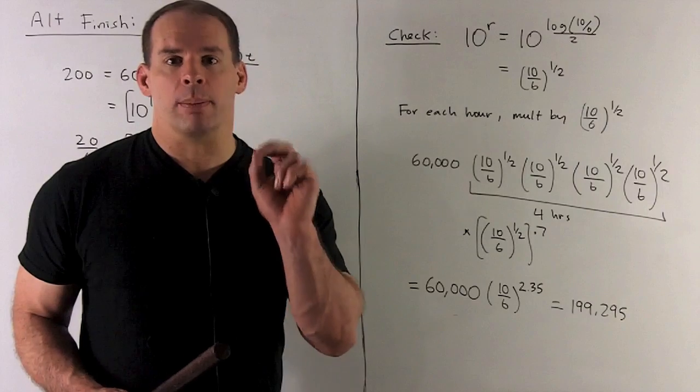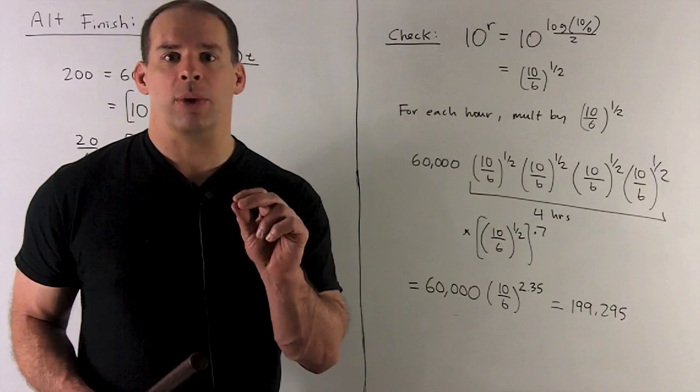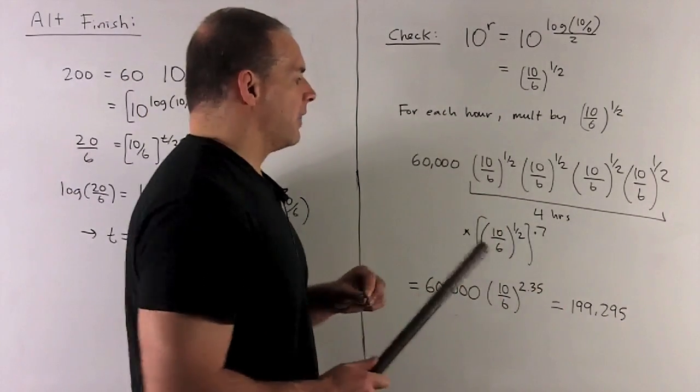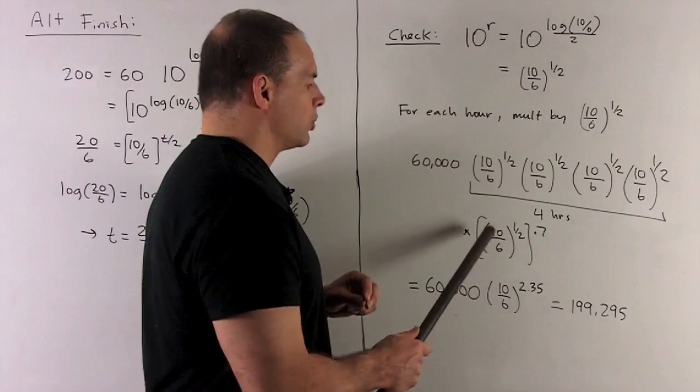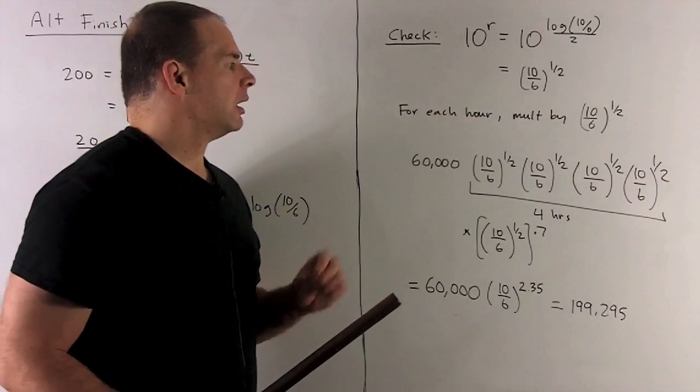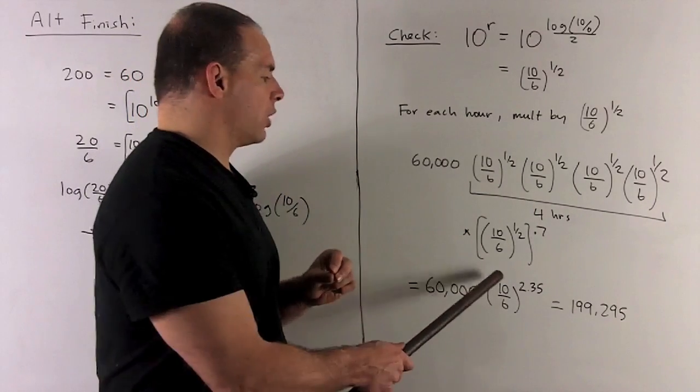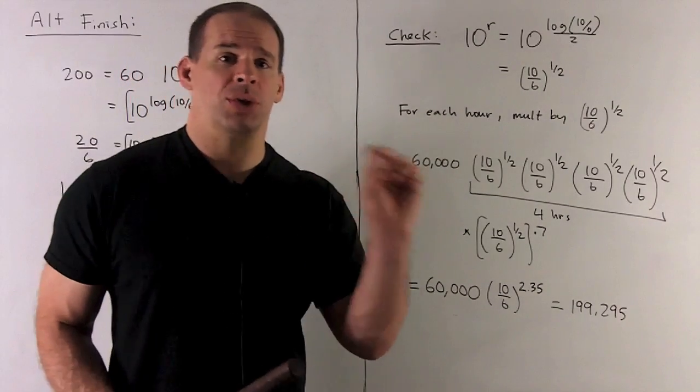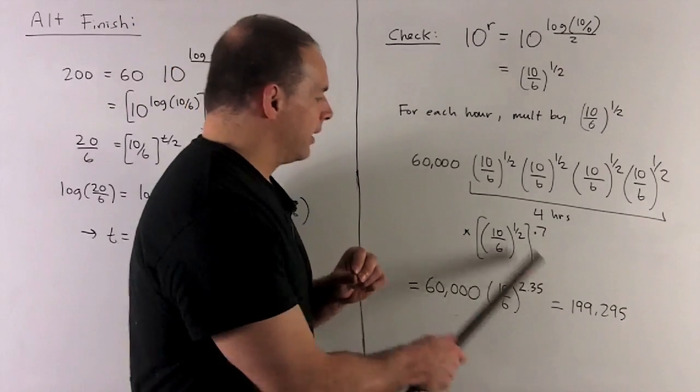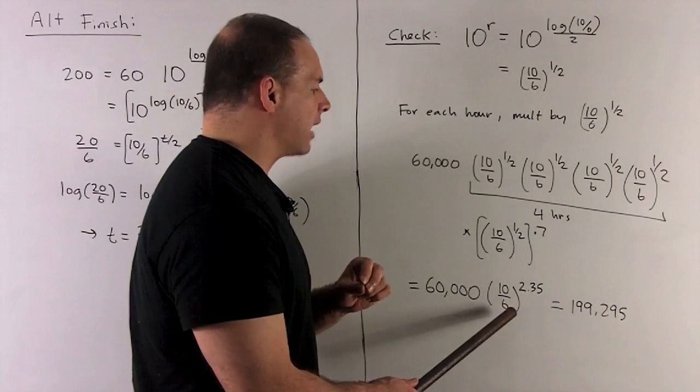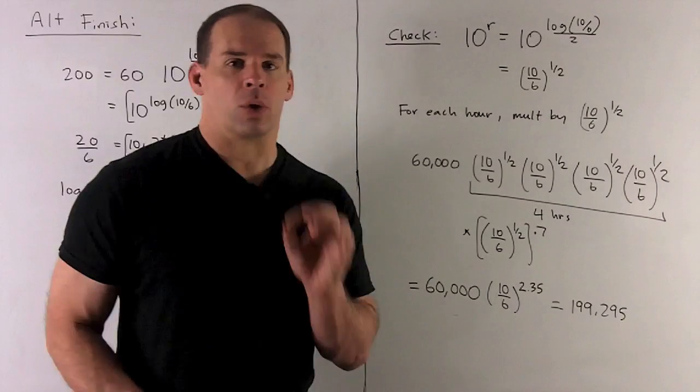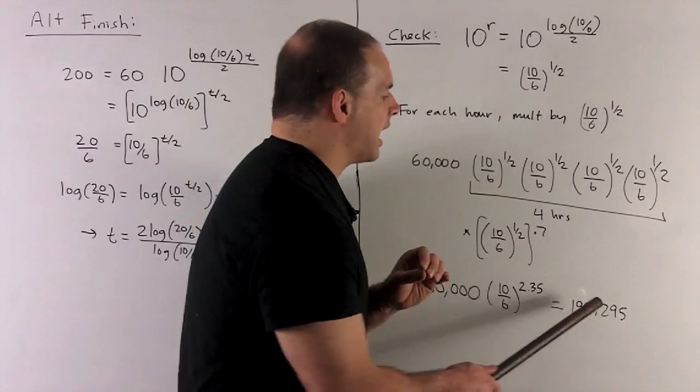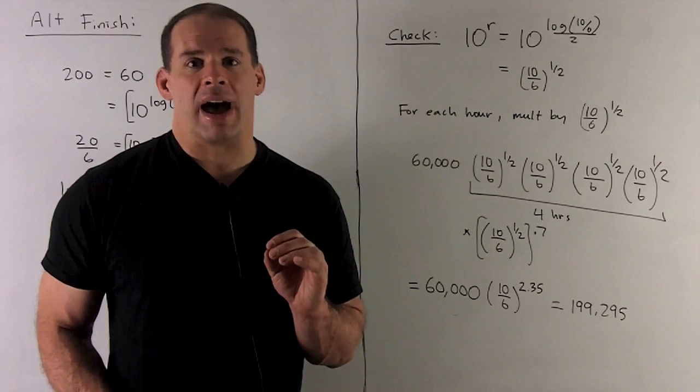That's going to be what we multiply by when one hour passes. So we have 4.7 hours passing, so I'll multiply by this 1, 2, 3, 4 times, and then for my last 0.7 hours, we're just going to multiply by that thing raised to the 0.7. If you simplify that, you're going to get 10 over 6 to the 2.35. To get from 60,000 to our 200,000, we're just going to multiply by this factor here. So I take this factor, crunch down the calculator, multiply by 60,000. We're expecting to get 200,000, or at least something in the ballpark. When I crunch it, I get 199,295. So we're off by about 700.